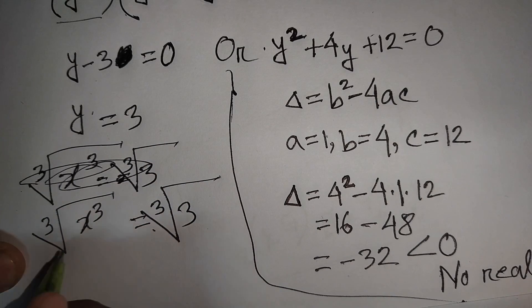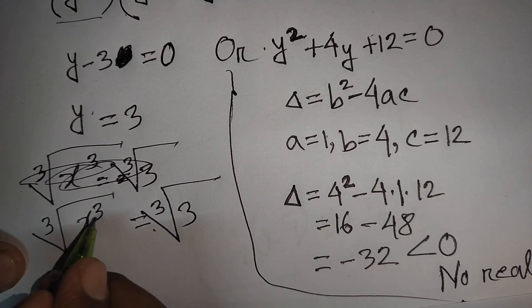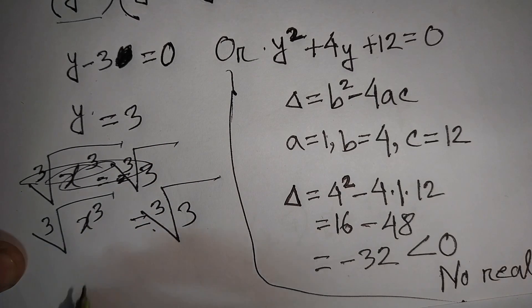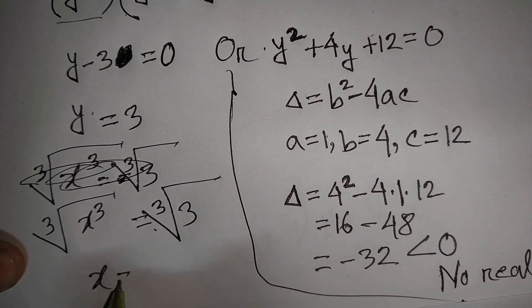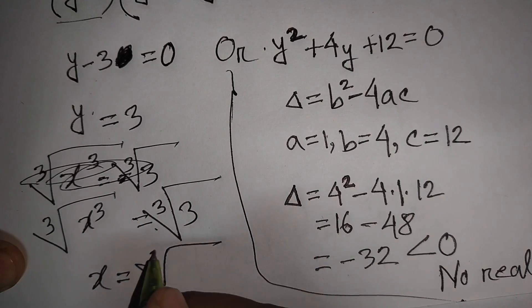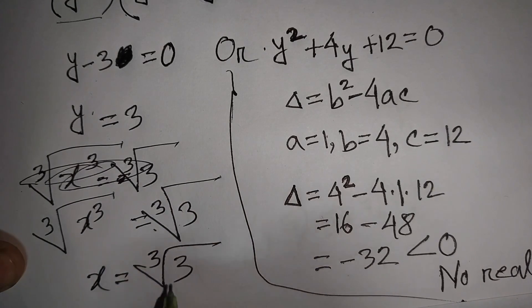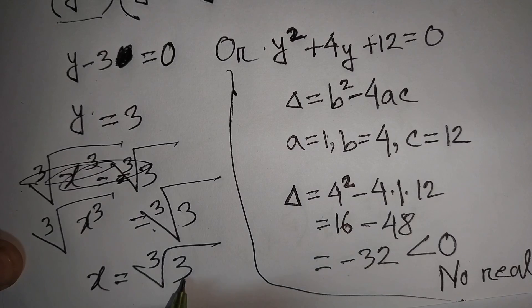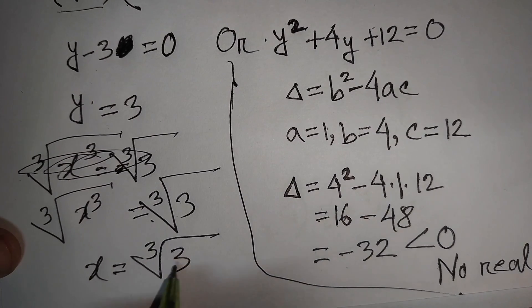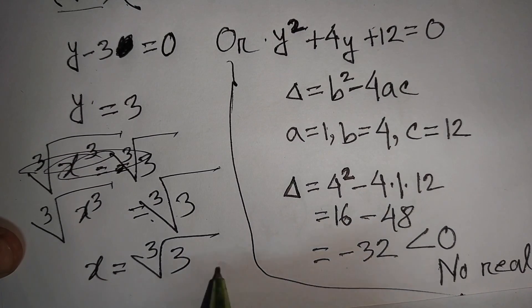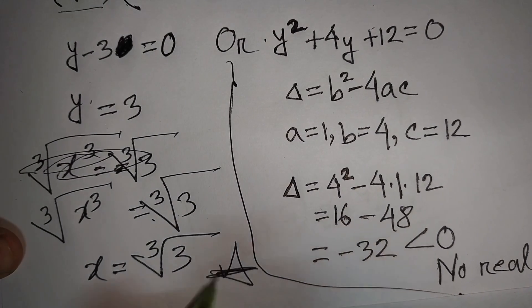The cube root and the power of 3 cancel, so x = ∛3. This is our final answer.